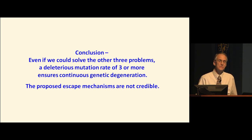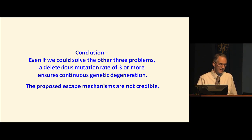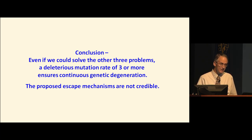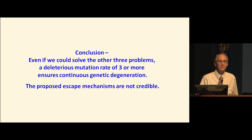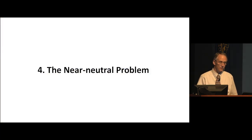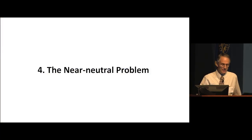The conclusion in terms of the large number of mutations pouring into the population: even if we could solve the other three problems I describe, a deleterious mutation rate of three or more ensures continuous degeneration. The proposed escape mechanisms are not credible — they've been falsified.